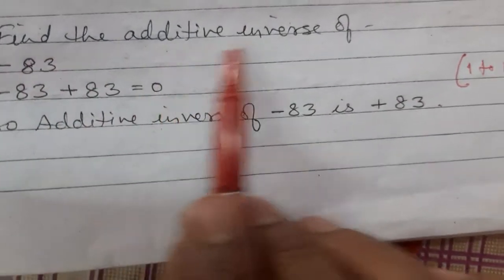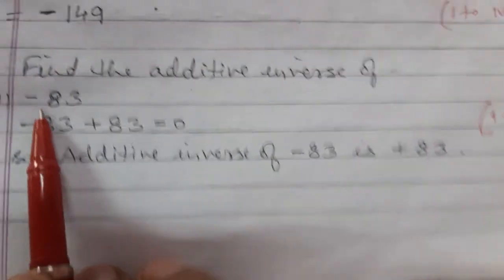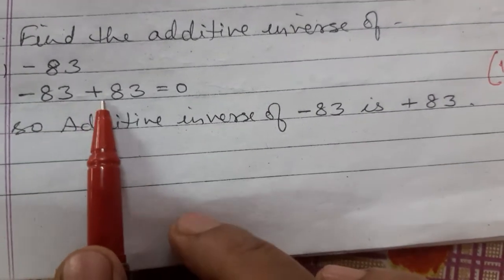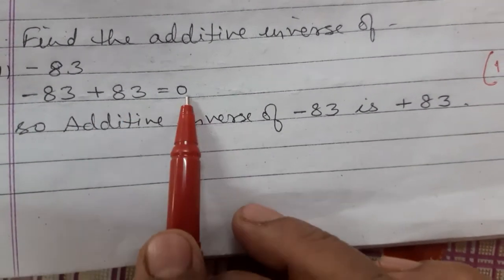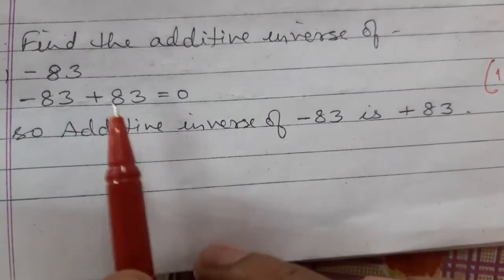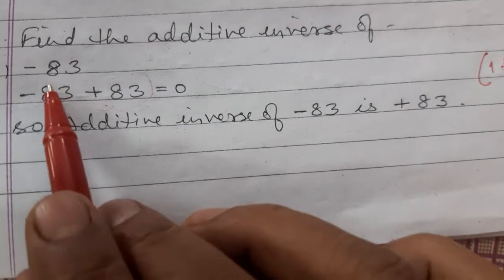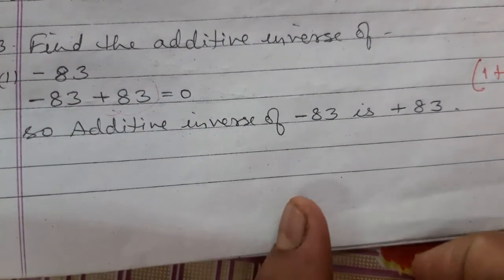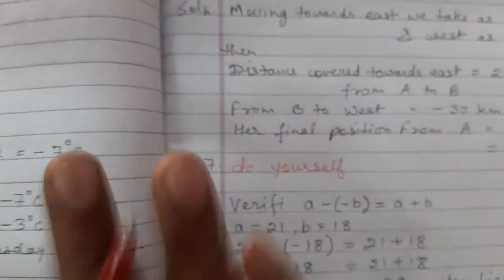Now, find the additive inverse of minus 83. Minus 83 plus 83 gives 0, so plus 83 is the additive inverse of minus 83. For this question, only 3 questions you will do in your copy.